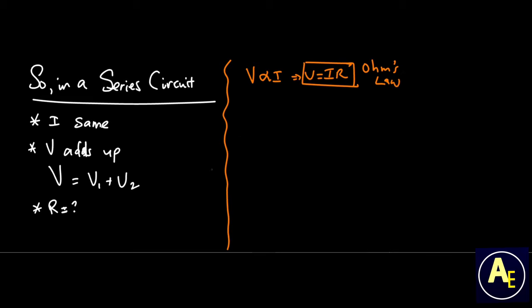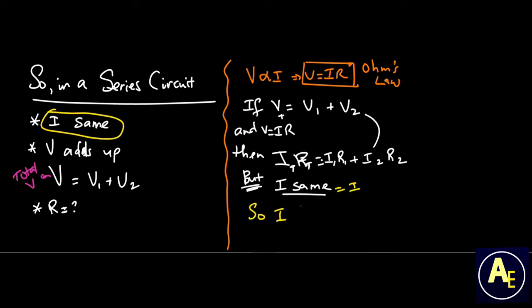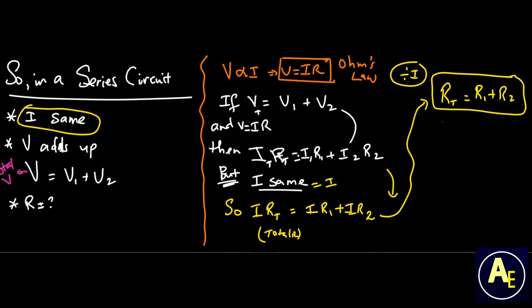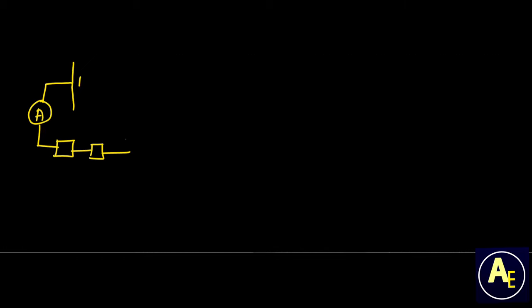So far in a series circuit: current is the same and voltage adds up. But what about resistance? Using Ohm's Law, we begin by stating that the total voltage in a circuit equals the sum of the resistors' voltages — V1 and V2. By substituting Ohm's Law, each voltage value is expressed as a product of current and resistance. Since current is the same, the total resistance in a series circuit is simply the sum of all individual resistance values.